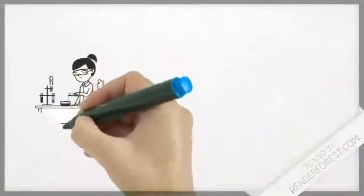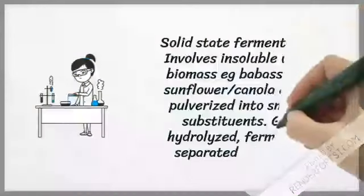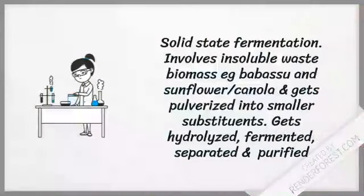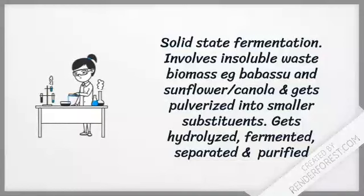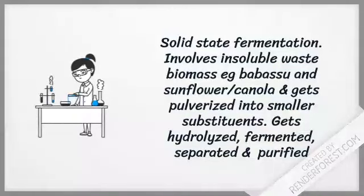Both enzymes can be made by a process of solid state fermentation, which is different from traditional fermentation in having no free-flowing liquid. Solid state fermentation usually involves an agricultural waste biomass, such as citrus waste for glucoamylase and sunflower or canola for alpha-amylase, often obtained as a byproduct of food processing, which gets pulverized into smaller substrates. These substrates then get hydrolyzed and fermented using solid state fermentation.